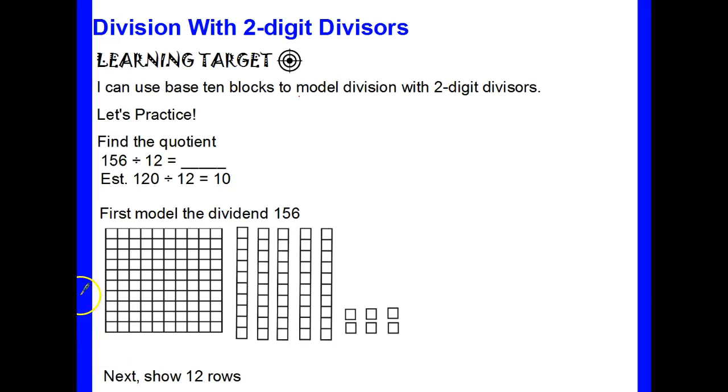We're going to start with 156 divided by 12. I went ahead and estimated to get my estimated quotient. I changed 156 to 120 divided by 12 because that's compatible, and then my estimated quotient is 10.